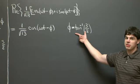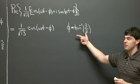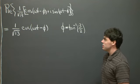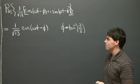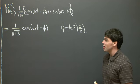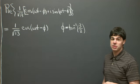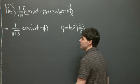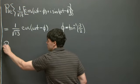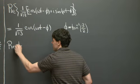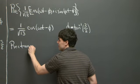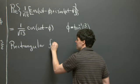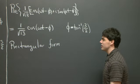Phi can also be understood as the angle lying between 0 and pi over 2. This concludes the polar form computation. Next, we compute the real part using rectangular form.